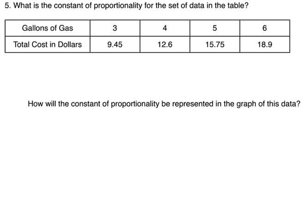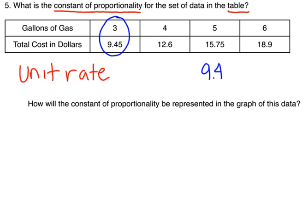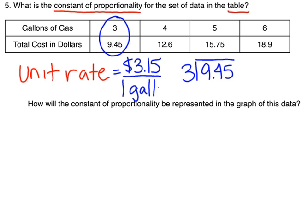Next, what is the constant of proportionality for the set of data in the table? Hopefully, we know that constant of proportionality in the table means that we are looking for a unit rate. We can use any pair we want in the table. I'm going to just pick the first two because it's the smallest numbers. I'll do $9.45 divided by 3. When I divide that out, I'm going to get a cost of $3.15 per one gallon of gas. Remember, unit rate, you need to have units.